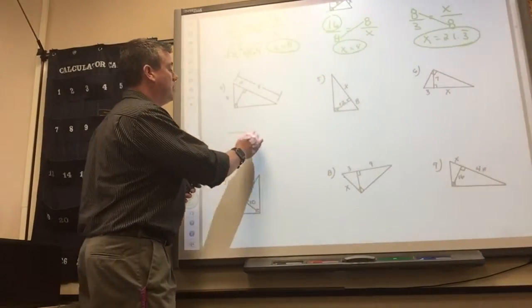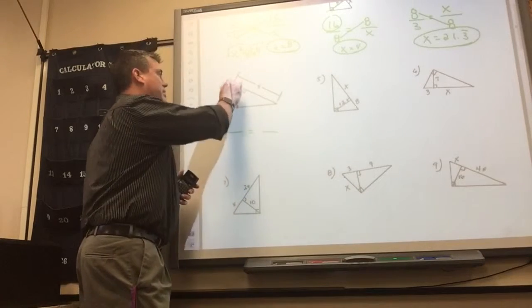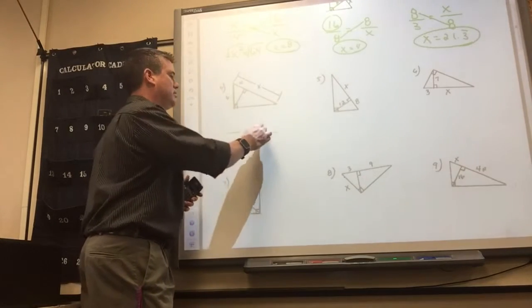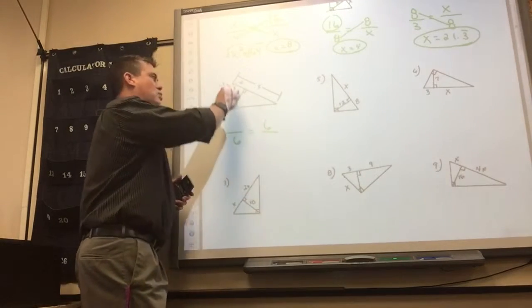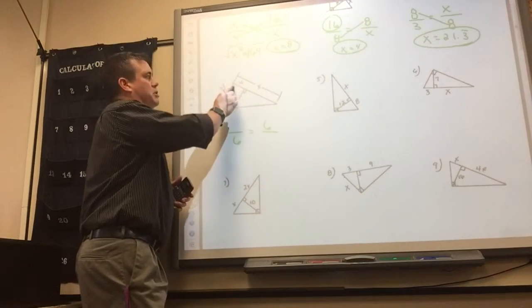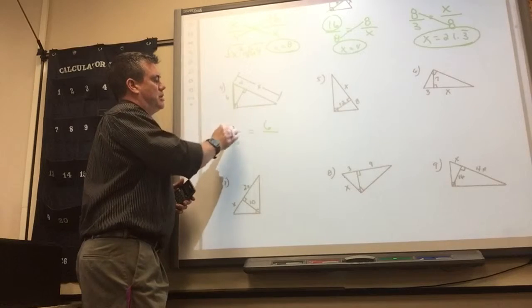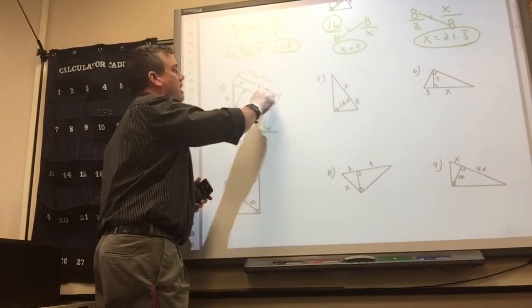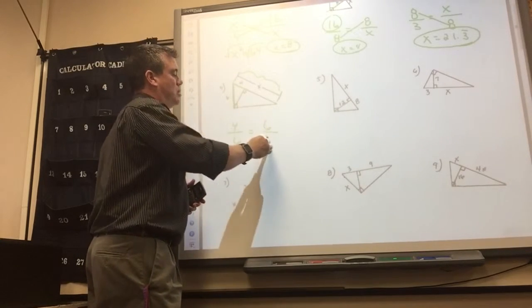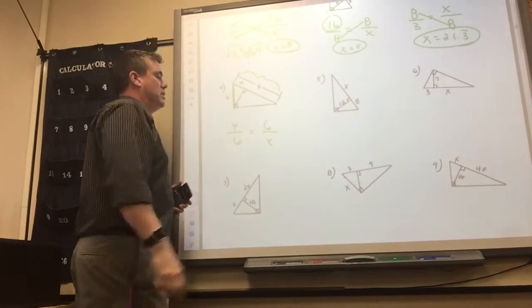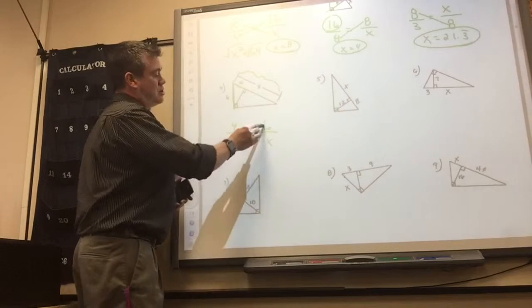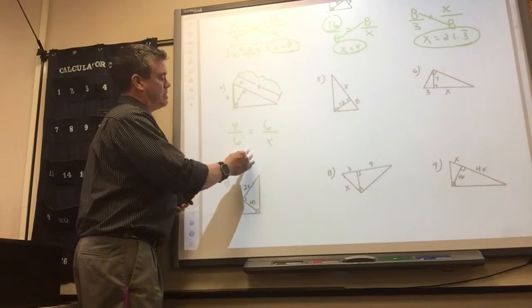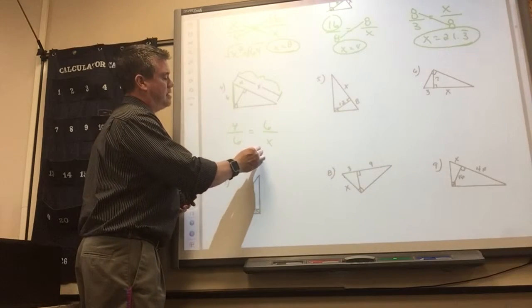Number 4 — the geometric mean is the leg. So when it's the leg, you put the piece hooked to it and the entire length, which is what they're looking for. So 6 times 6 divided by 4 is 9.